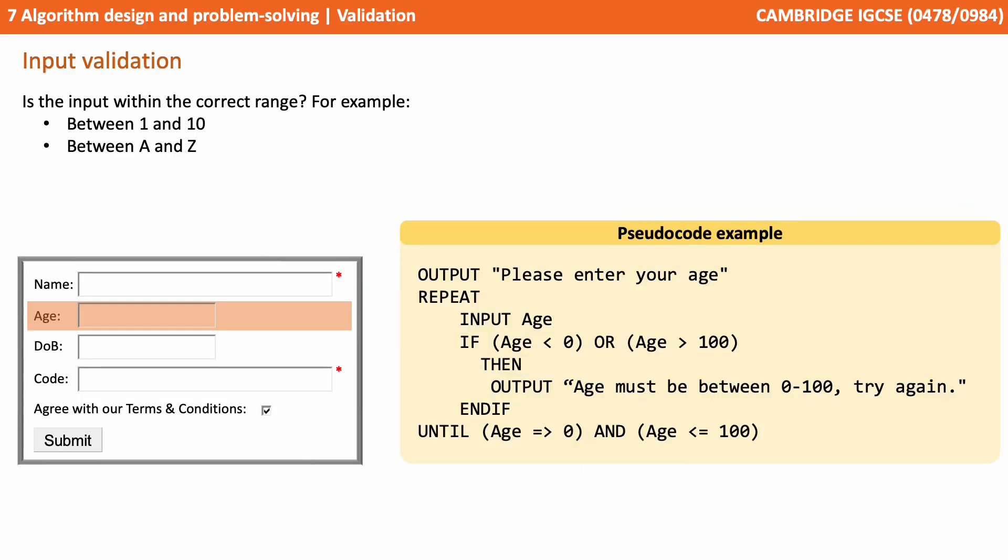Again, we could perform sensible input validation with a range check on the age field. We check the value entered, and if it's less than 0 or greater than 100, we keep prompting them to enter the number again.